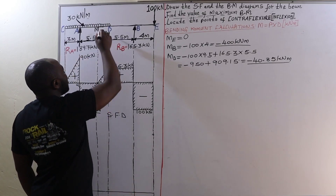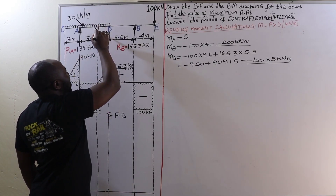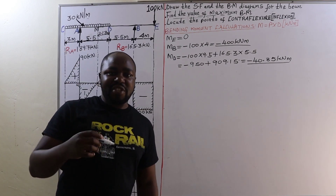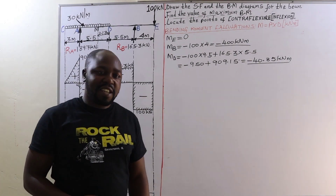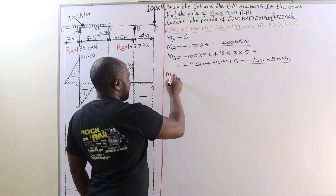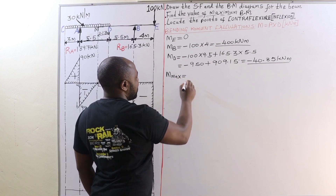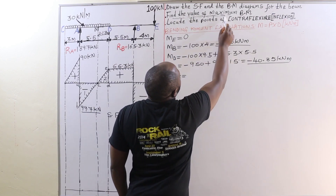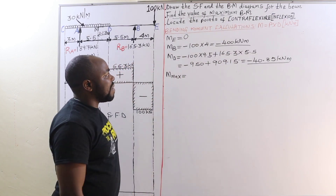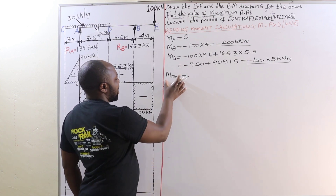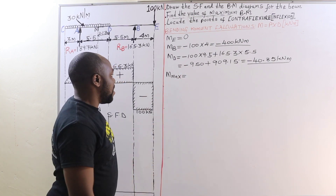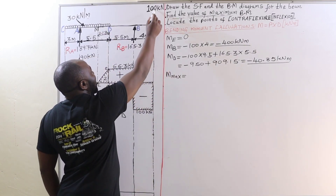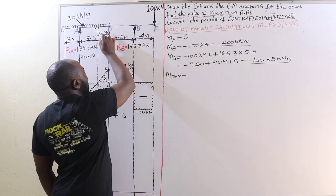Here we have point M, which is the position of the maximum bending moment. We are required to find the value of the maximum bending moment. To do so, we are going to take moments about point M, starting with negative 100 times the distance from E to M.